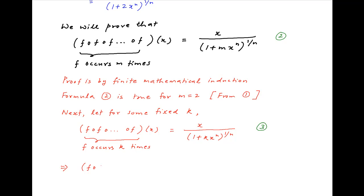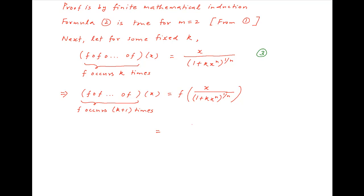Now applying the function to both sides of Result 3, the left-hand side gives f of f of ... and so on k plus 1 times of x. The right-hand side is f of x upon 1 plus k times x raised to the power n, whole raised to the power 1 upon n. Using the expression for f(x), the right-hand side expands to x upon 1 plus k times x raised to the power n, whole raised to the power 1 upon n, divided by 1 plus x raised to the power n divided by 1 plus k times x raised to the power n, whole raised to the power 1 upon n.